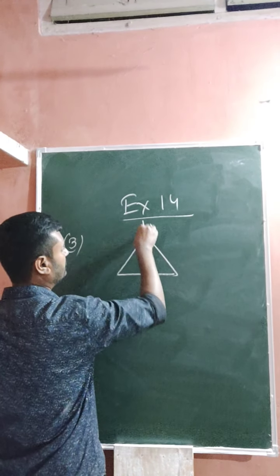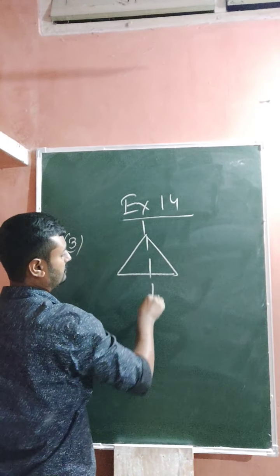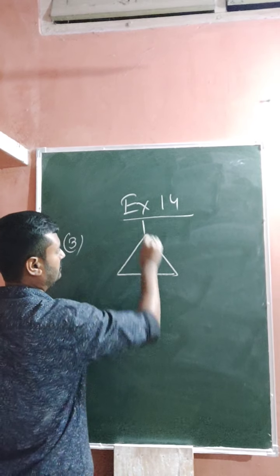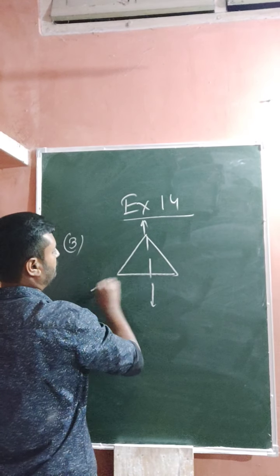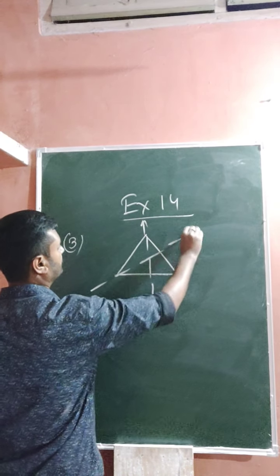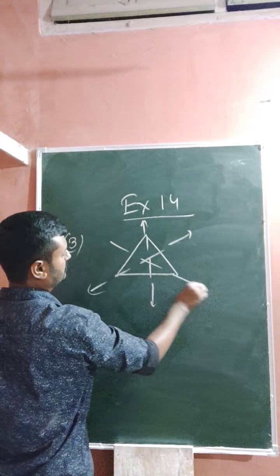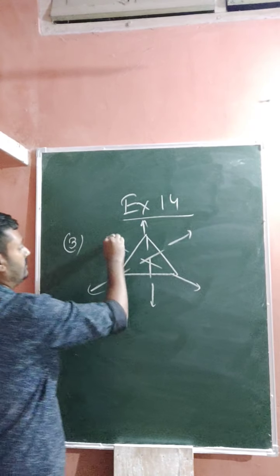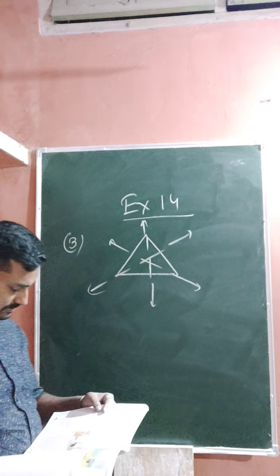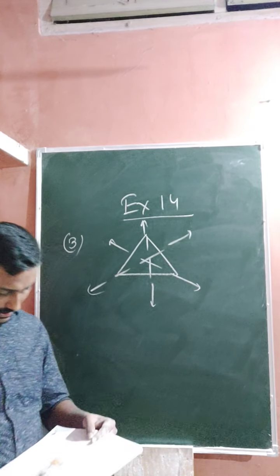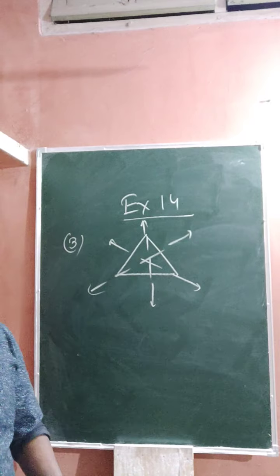Next, consider a triangle — suppose an equilateral triangle. It has one line of symmetry, then two, then three. So an equilateral triangle also has multiple lines of symmetry.